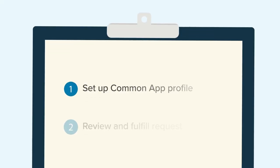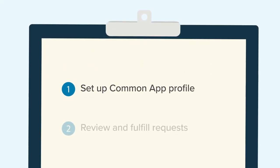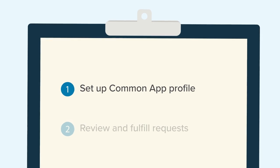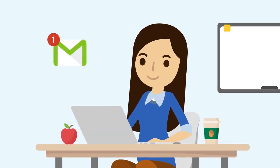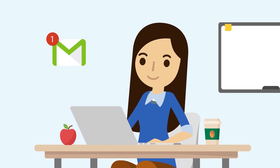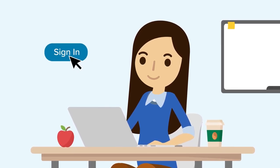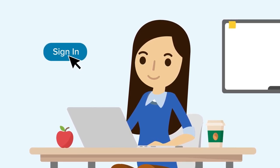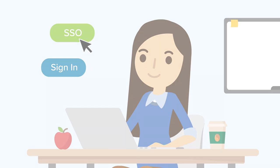Once you've received your first request, you'll need to set up your Common App profile in Zello. You'll get notification of your requests by email from your students. Click Sign In to open the Zello login page in a new tab. Or, if your school uses single sign-on, access Zello as you normally would.